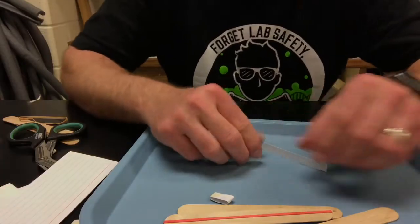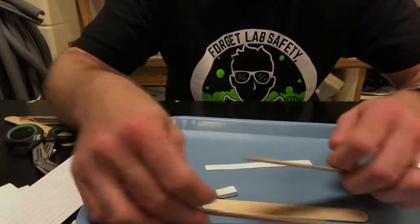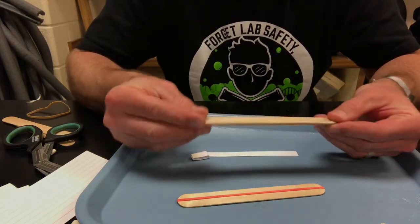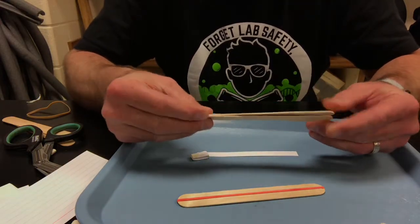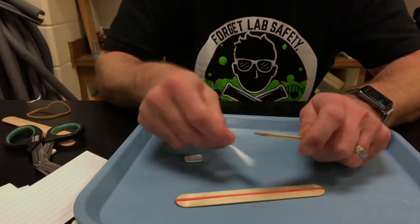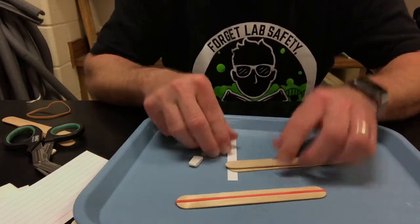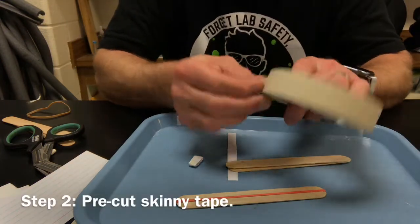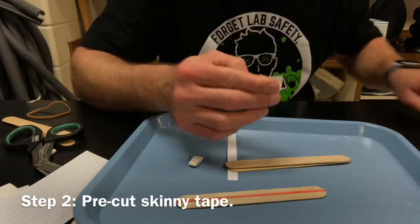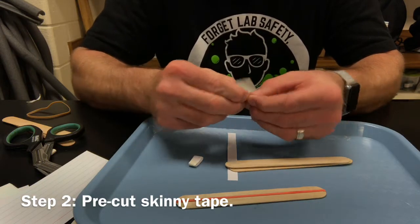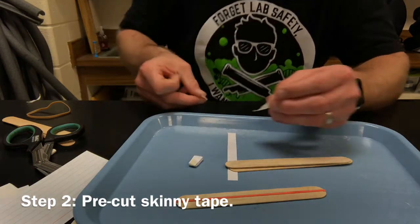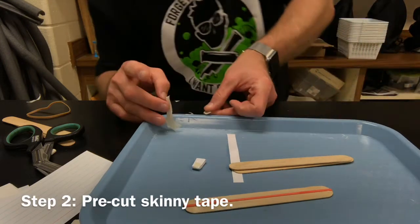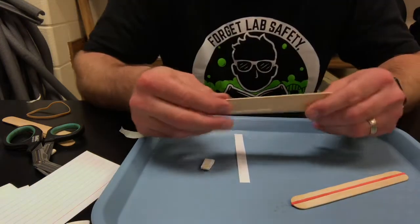Take two empty popsicle sticks together like this. I'm gonna take this strip, and it really helps to have your tape already cut. I'm gonna make it skinny like this. I want really skinny pieces of tape. Put those to the side.